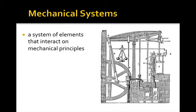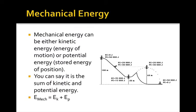Now mechanical systems are a system of elements that interact on mechanical principles. And you use mechanical systems to do stuff. And if energy is the ability to do stuff, then energy is present in mechanical systems. Now mechanical energy, we define as being either kinetic energy, which is energy of motion, or potential energy, which is stored energy of position. We could say that mechanical energy is the sum of kinetic and potential energy. So this expression down here, mechanical energy equals eK plus eP means mechanical energy equals the sum of kinetic and potential energies.